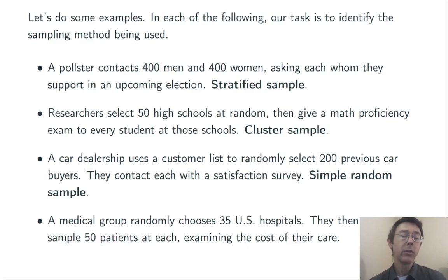Number four, a medical group randomly chooses 35 US hospitals. They then take a random sample of 50 patients in each, examining the cost of their care. This is a multi-stage sample.